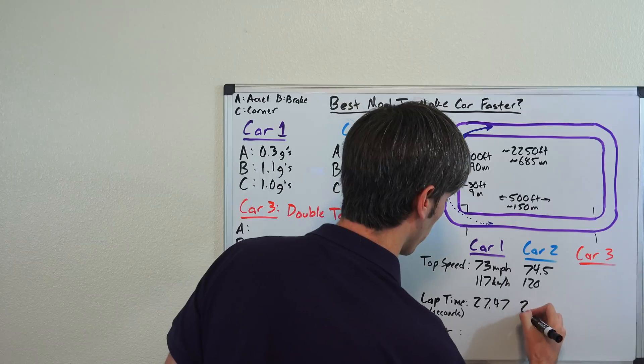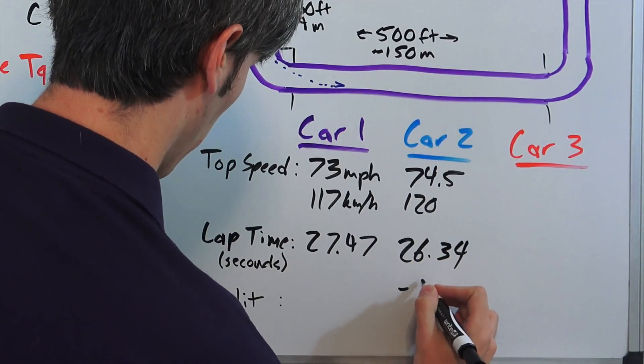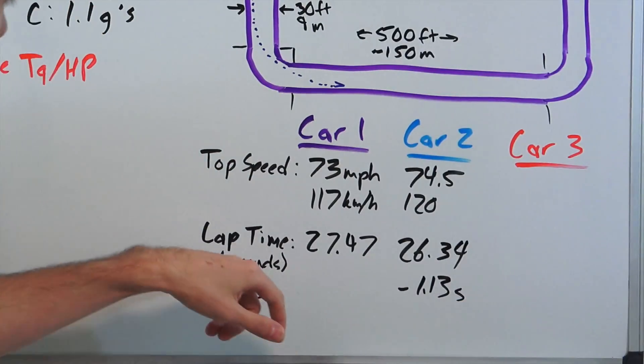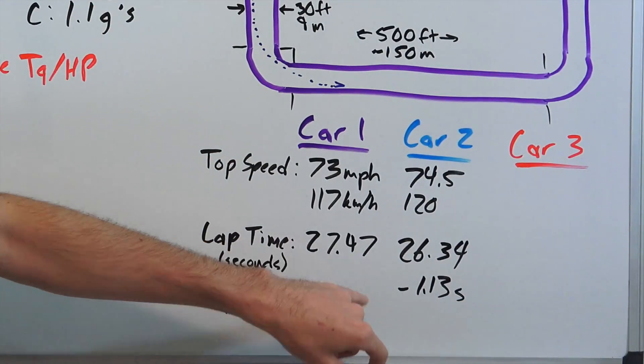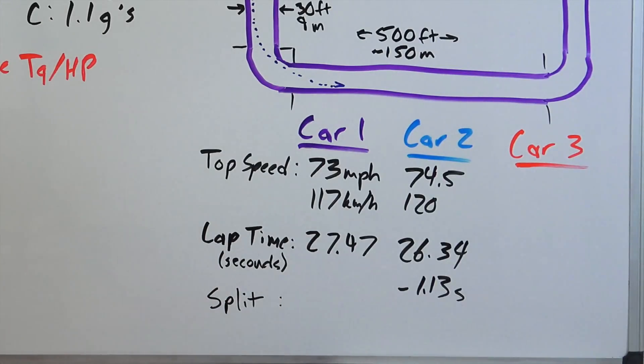Doing this with the car with better tires, we're going to get 26.34 or a difference of 1.13 seconds split versus our car without these tires. So we're able to shave off a second point 13 just by changing the tires because we're able to carry more speed in these corners.